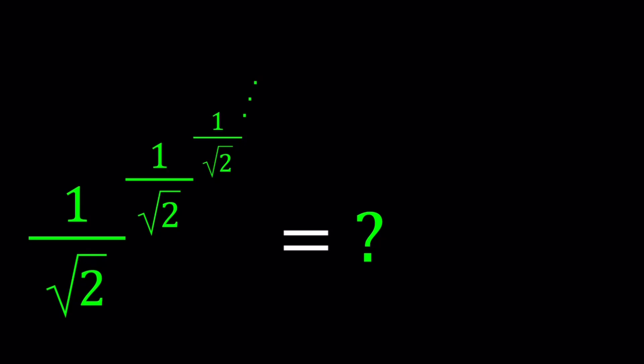We have an infinite expression, an infinite tower, and the bases and the exponents are all 1 over square root of 2. And this goes on forever. We're going to try to evaluate this expression.